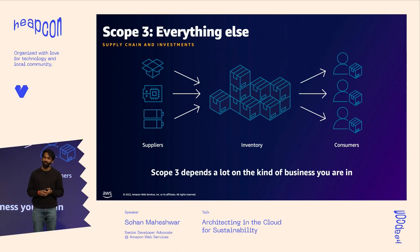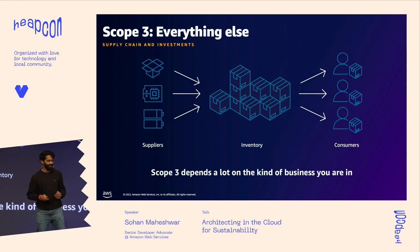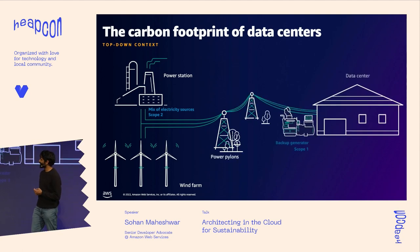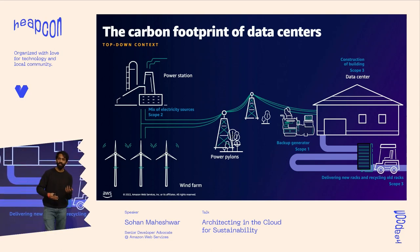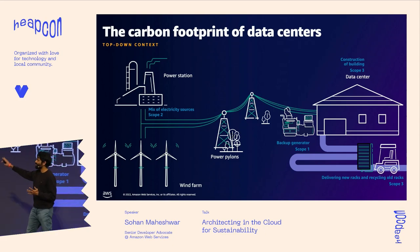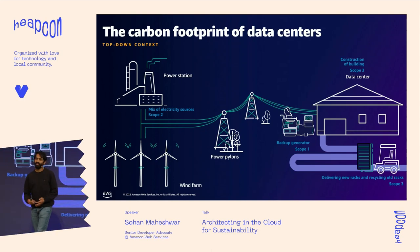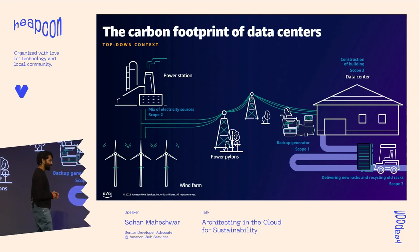In the last ten years or so, we've moved from a typical data center to the cloud. If you apply these scopes to a data center, you can see scope one where you have backup generators burning fuel, scope two that powers those generators through wind farms and electricity sources, and scope three where transportation brings racks of servers and stacks them up.